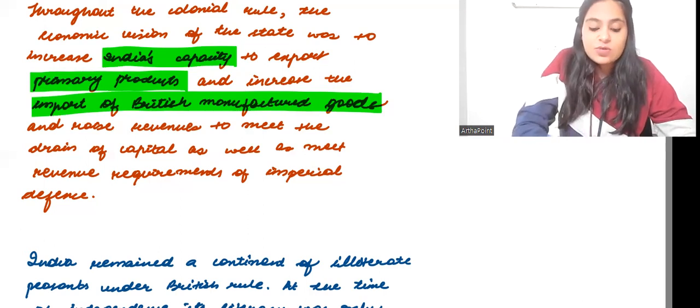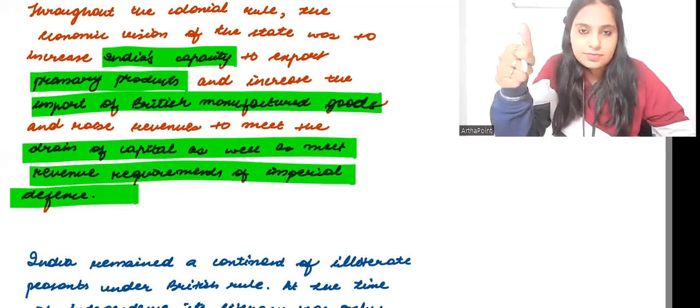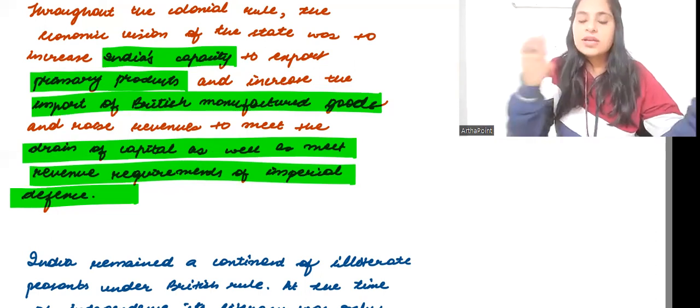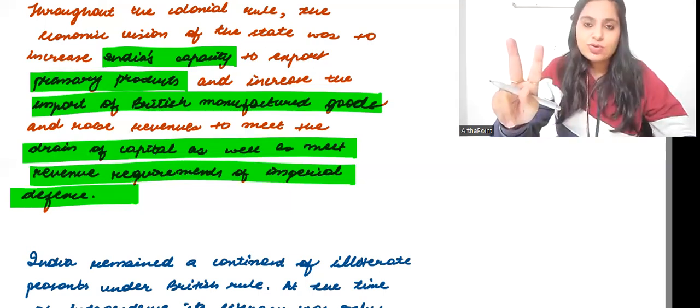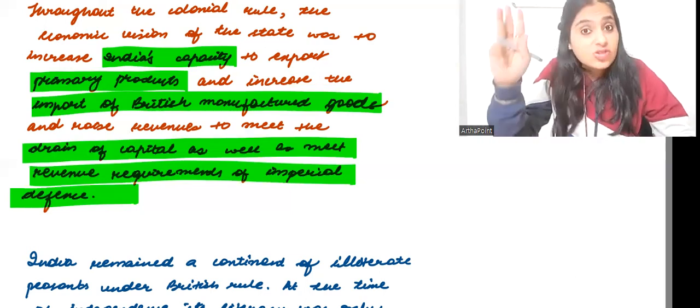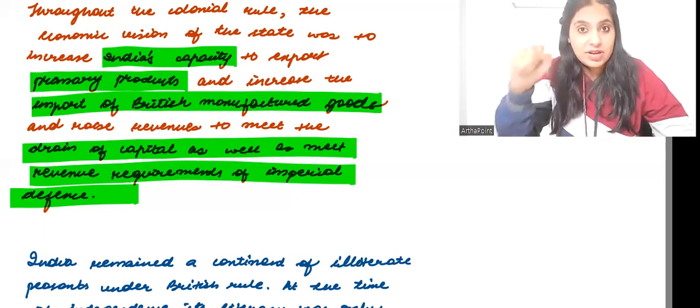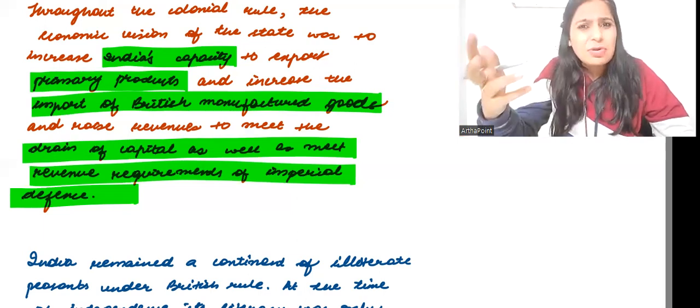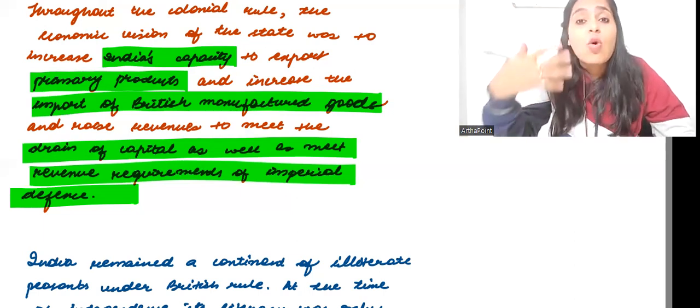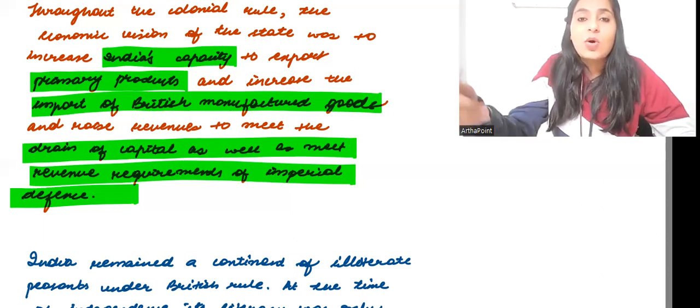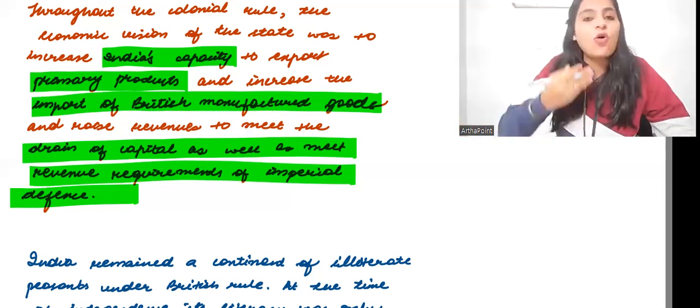Raise revenues to meet drain of capital as well as meet revenue requirement of imperial defense. So one, drain of capital - all the wealth from India to Britain. Second, primary products being produced in India. Third, manufacturing products in Britain. Fourth, Britishers were raising revenue from India, land tax. They were putting so much, we will talk about it in detail in the agricultural chapter. They were asking for so much from Indians on agriculture also, taking so many taxes and just taking all this money with them.